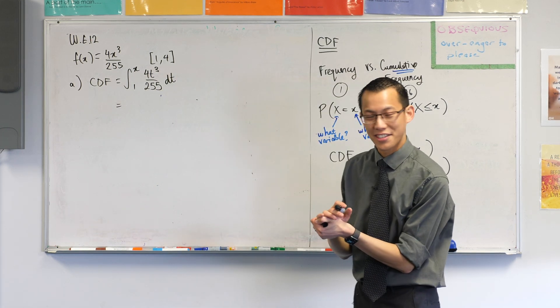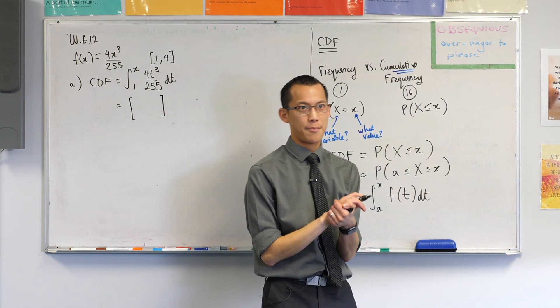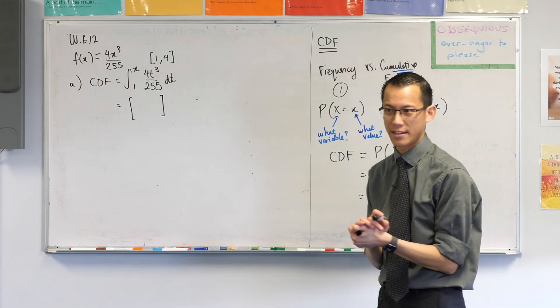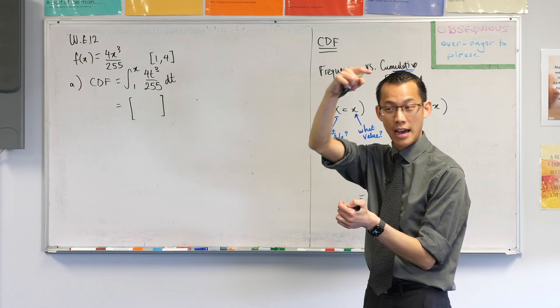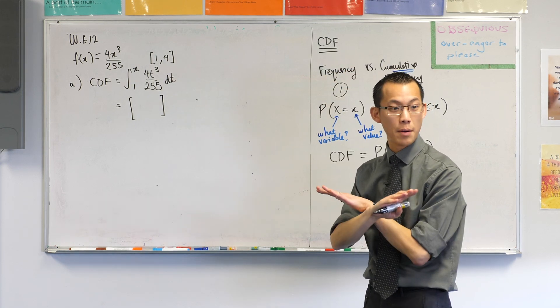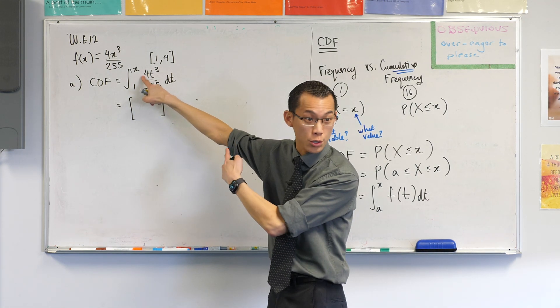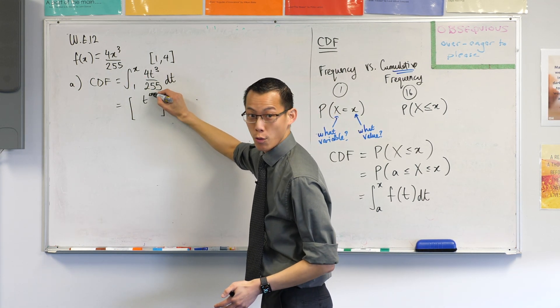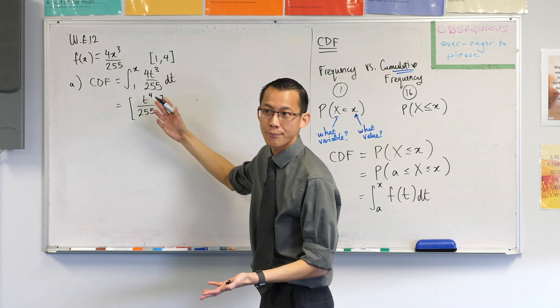All right, now we're actually ready to do the integration. So here is going to be my primitive. 4t cubed, what's going to happen to that t cubed? It's going to become t to the power of 4, and then I divide by 4. Well, that division by 4 will cancel with the 4 that's already there. So I'll get t to the power of 4 divided by 255, which is already there.